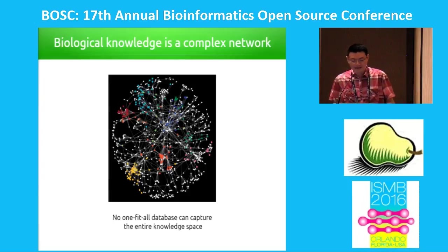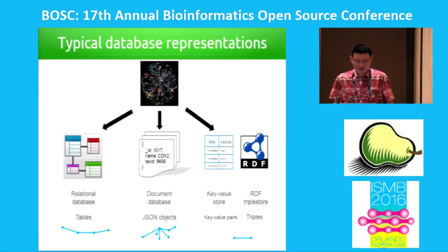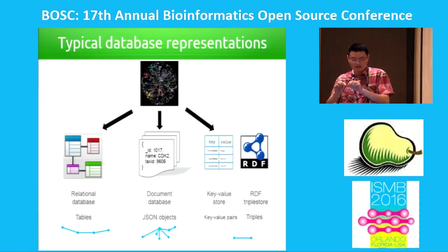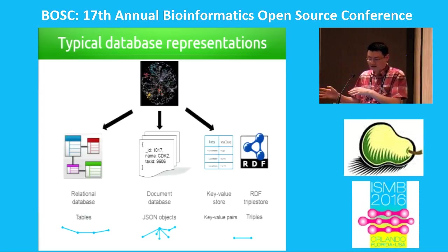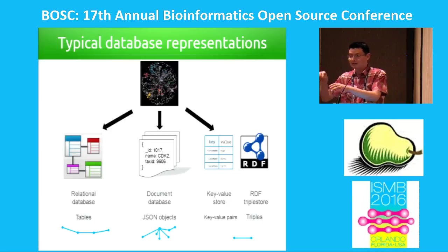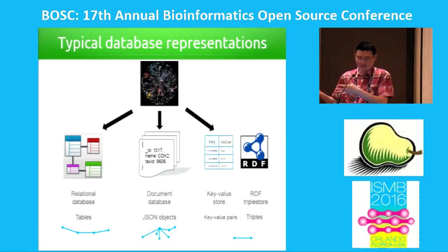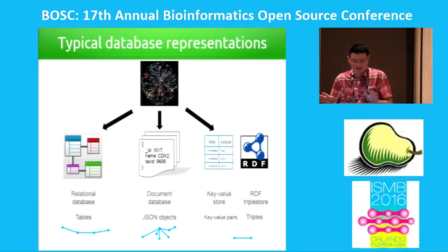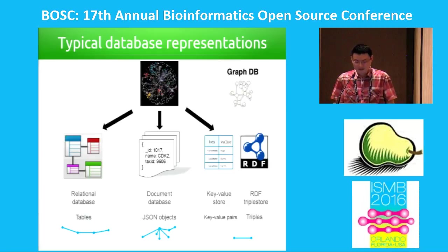This graph basically represents, even though it's a very simplified representation, all of our biological knowledge — it's basically like a hairball. We can typically represent this kind of knowledge in a relational database, where you store one string of data from the hairball into a table. Another way, in a document database, you basically take each node and collect all the nodes connected to it and store them in a document. Another way is to store it in key-value pairs or RDF triples, basically storing every little piece of the hairball into your database.